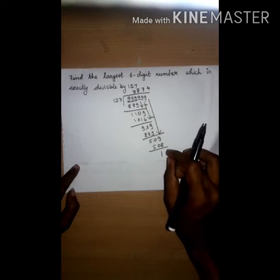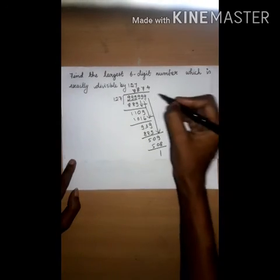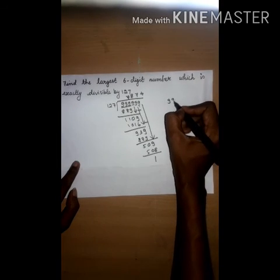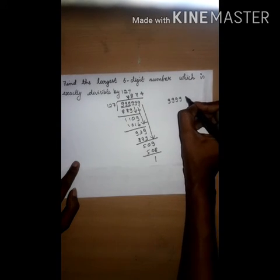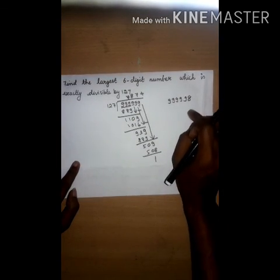Then it will be divisible exactly. Yes or no? So just subtract this 1 from the divider. So our answer is 999,998. Subtract this 1 from there. So this is our answer.